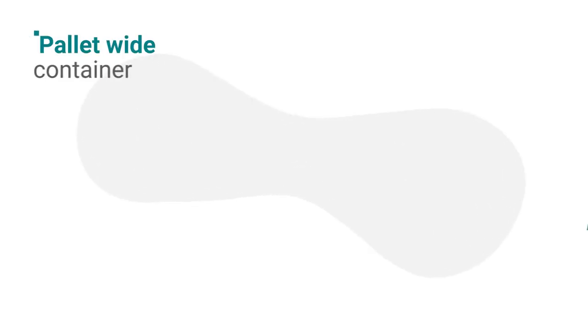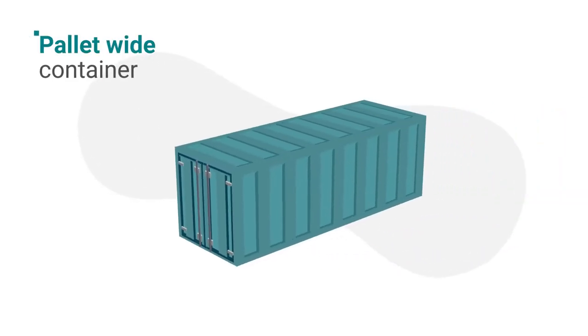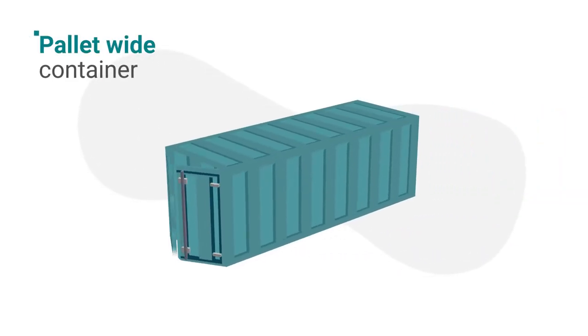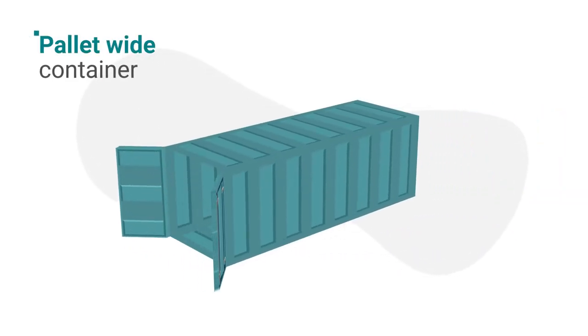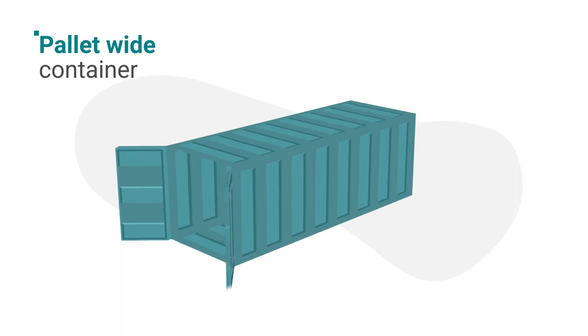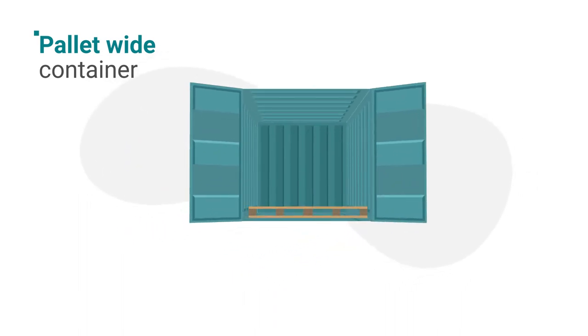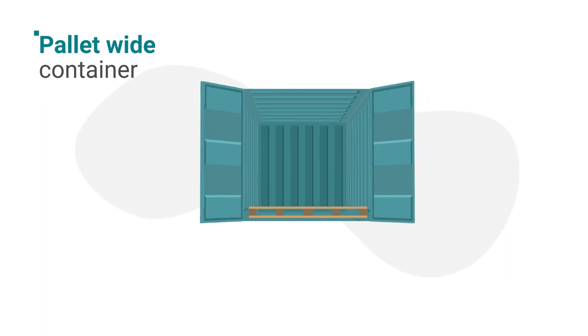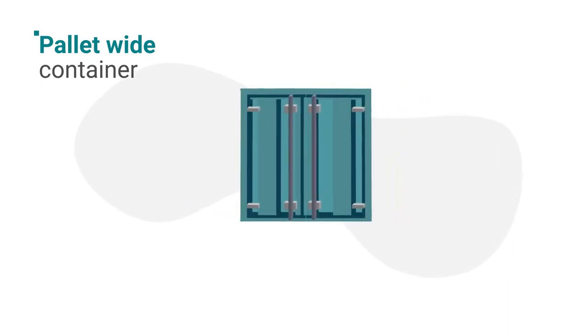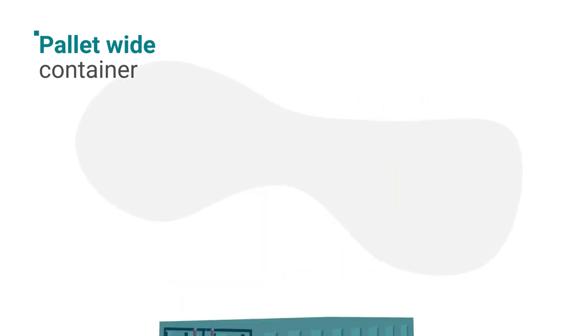5. Palette Wide Container. These containers are designed to carry wooden Euro pallets, which are popular in Europe. Because the pallet wide container is 5 cm wider than the standard container, it can take up to 15 Euro pallets, instead of the average 11.